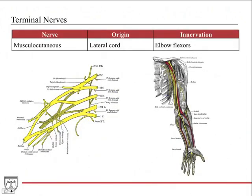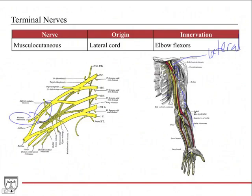Looking at each nerve individually: the musculocutaneous nerve comes off the lateral cord. It pierces through the coracobrachialis muscle in the arm, then travels on top of the brachialis muscle, innervating the flexor muscles of the arm. At the elbow joint it terminates as a sensory nerve providing some sensation in the forearm region. Its main function is innervating the flexor muscles in the anterior compartment.